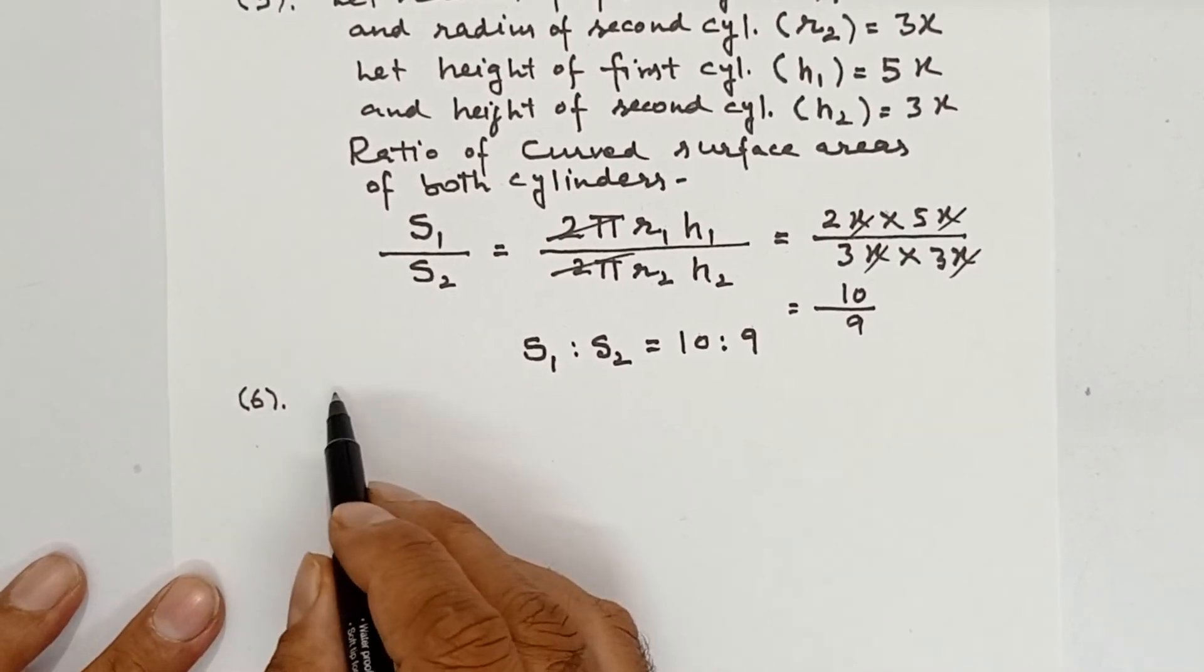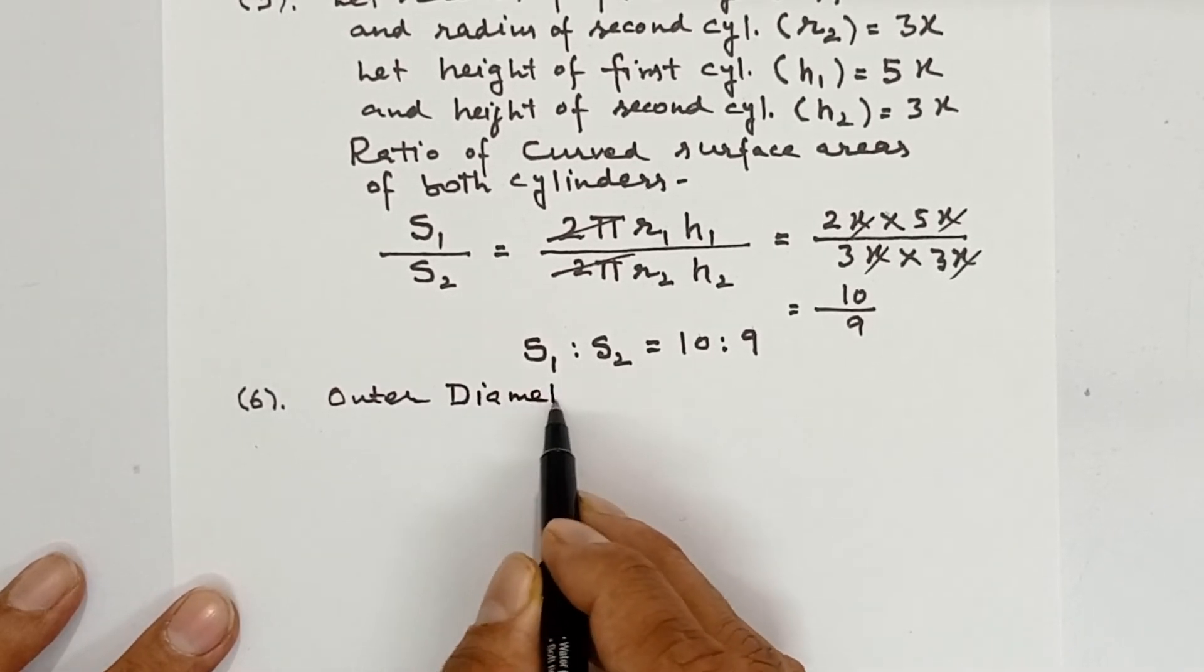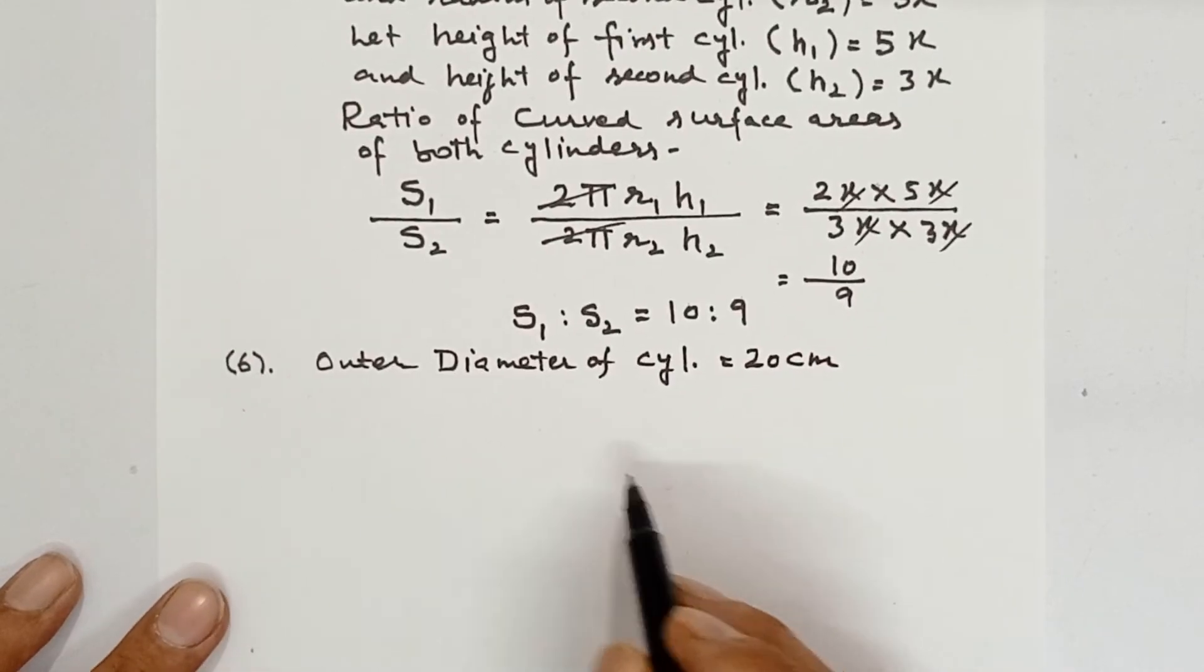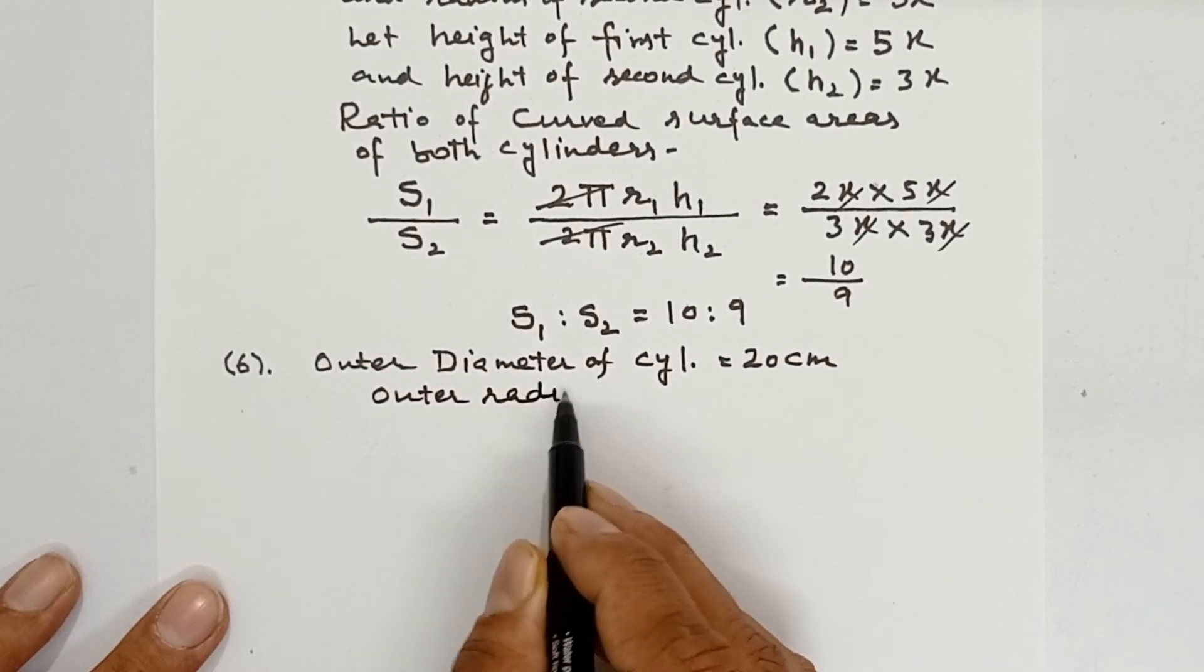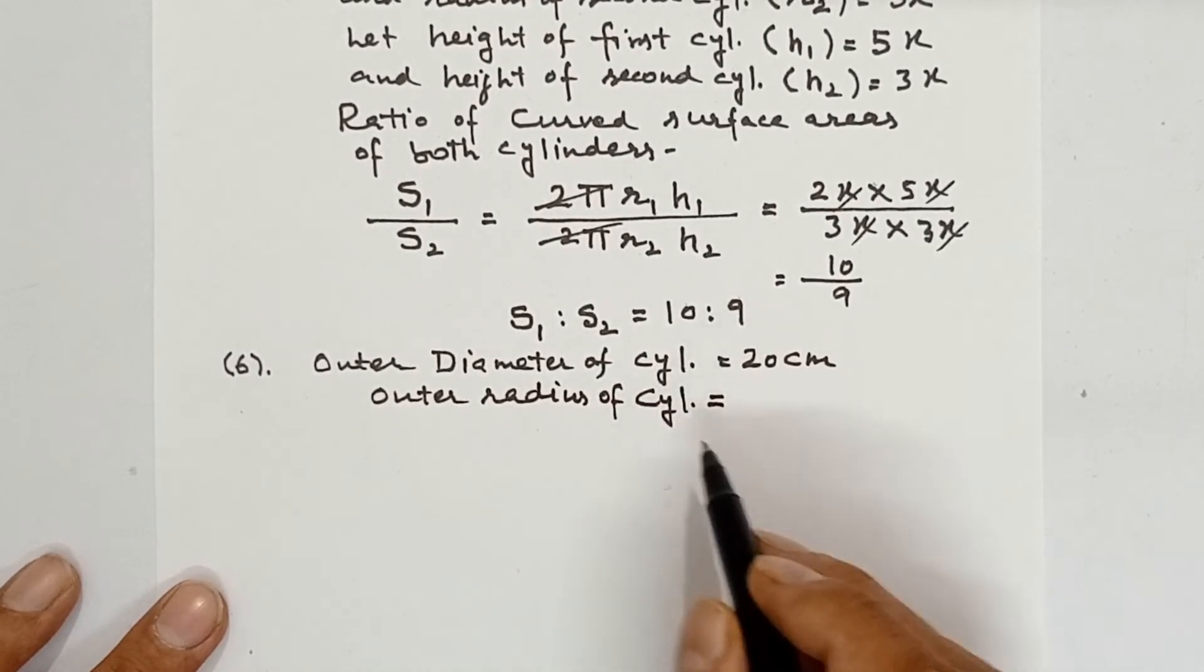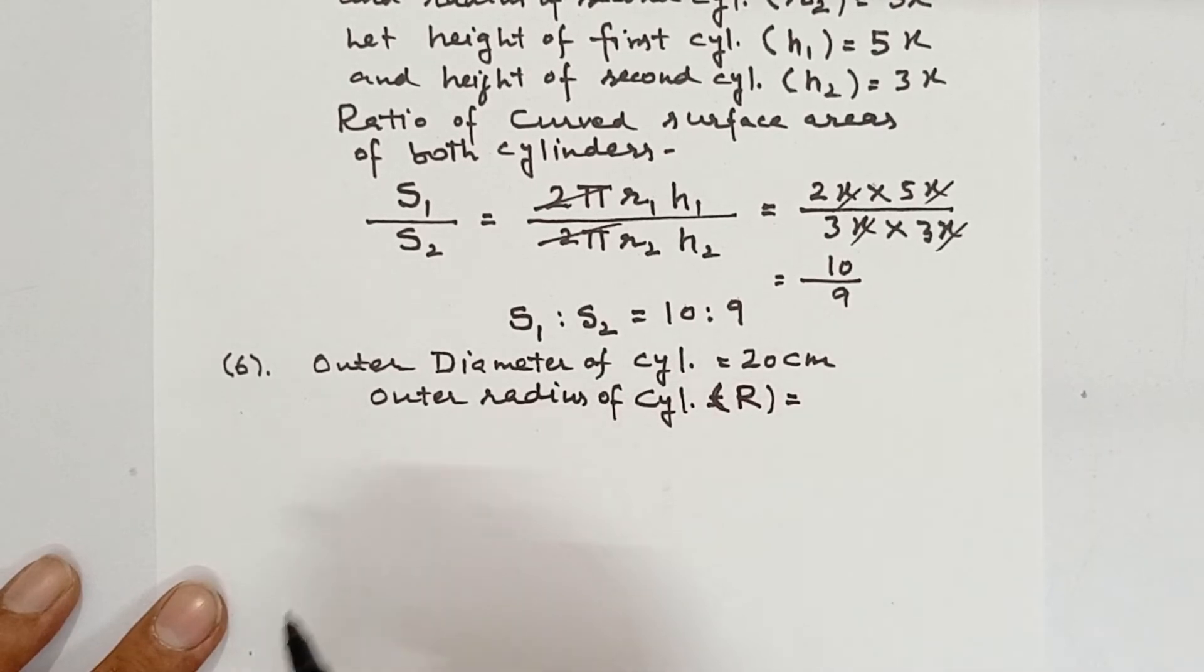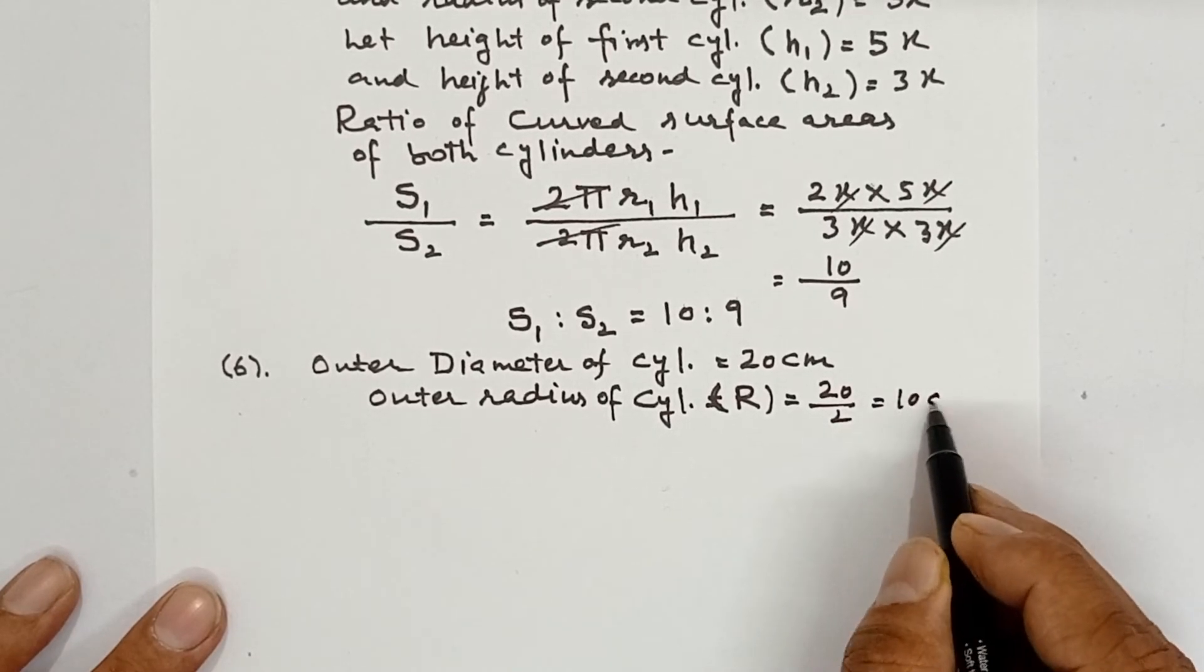Here I am writing outer diameter of cylinder. Outer diameter of cylinder is 20 cm. Now outer radius of cylinder, you may denote it by small r or capital R. Suppose I denote it by capital R. It is 20 cm, so radius is 20 by 2, which is 10 cm.